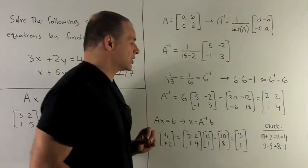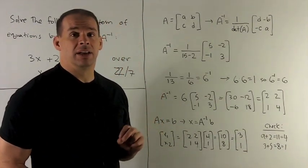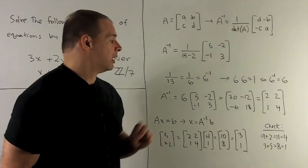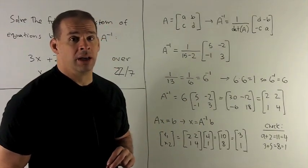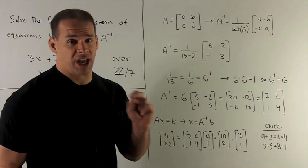When I put it back in, we'll notice 9 plus 2 is 11. Subtract 7 gives me 4. 3 plus 5 is 8. Subtract 7 gives me 1. So our solution checks out.